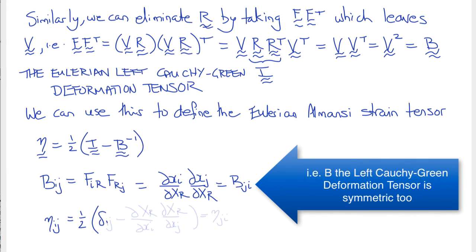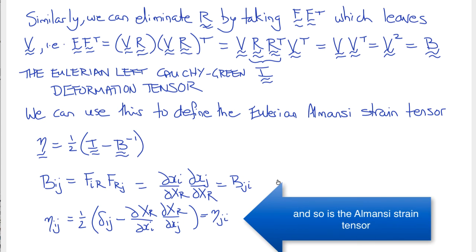Writing out the strain tensor in index notation, we get ηij is one-half of δij minus ∂Xr/∂xi ∂Xr/∂xj, which is also symmetric.